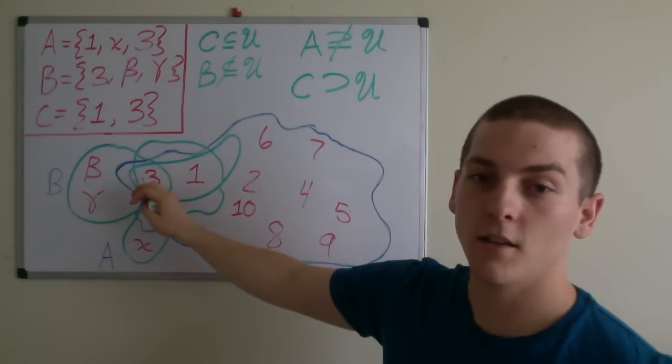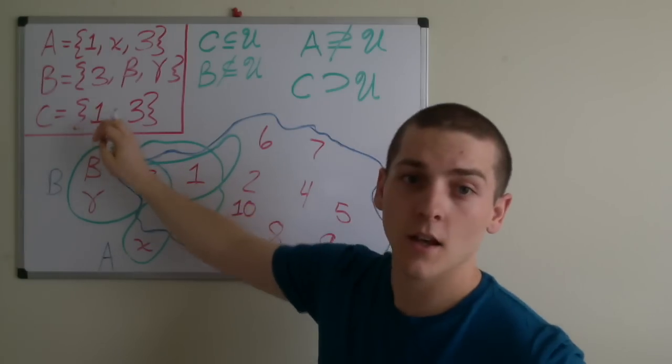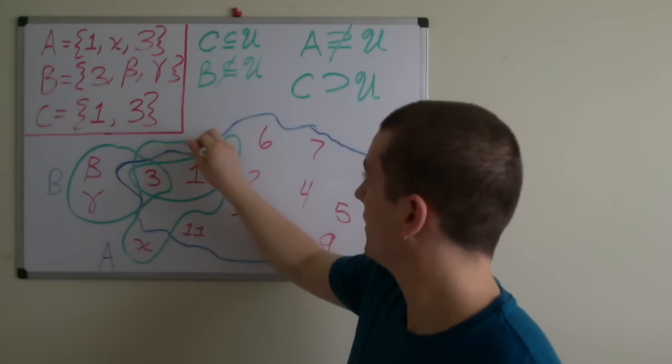And finally, this set contains elements 1 and 3, so this is the set C.